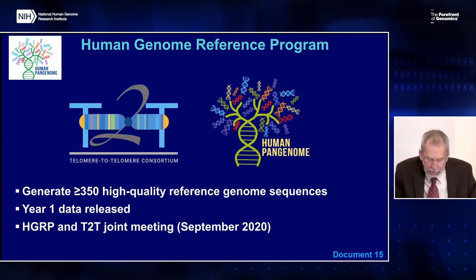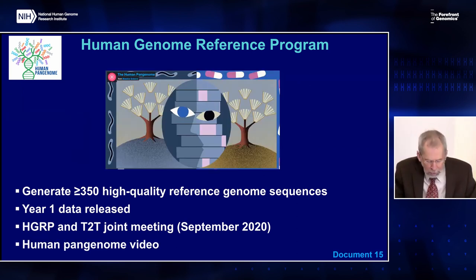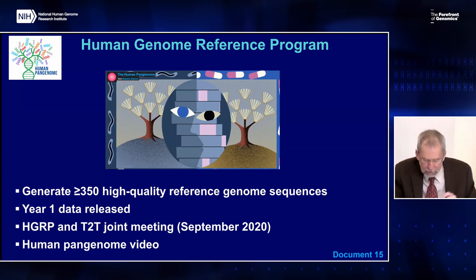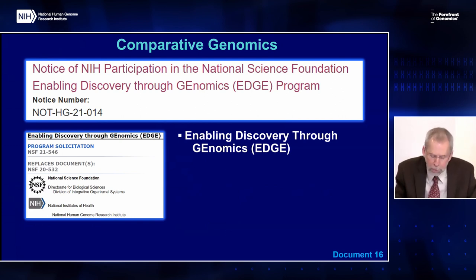Last September, HGRP held its kickoff meeting in collaboration with the telomere-to-telomere, or T2T consortium, featuring topics such as data production and technologies, samples and representation, and graph genome representations. To explain the concept of a pan-genome, NHGRI collaborated with the media company Massive Science to produce a video entitled The Human Pan-Genome. NHGRI regards comparative genomics as an important research area that can help maximize our understanding of genome function, and we also see it as an appropriate area for partnerships and collaborations with other communities and agencies.